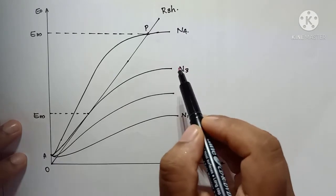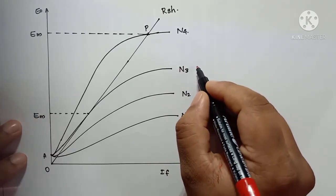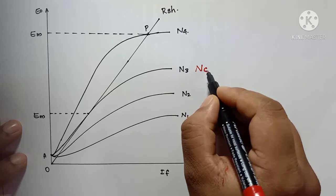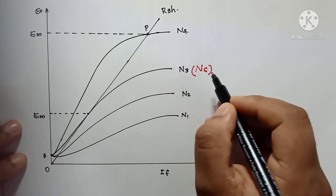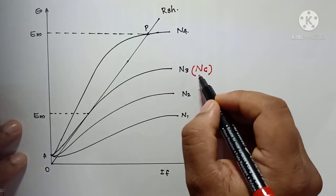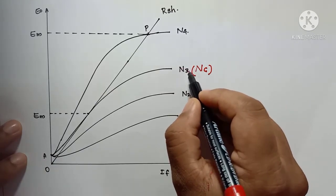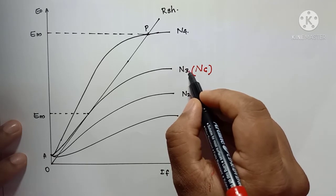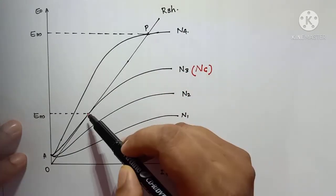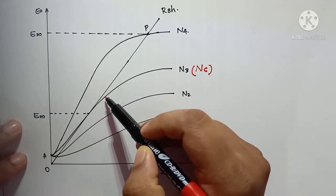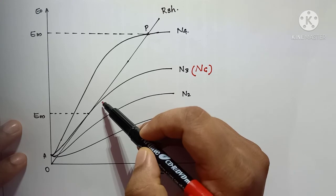That speed is known as the critical speed, represented as Nc. The critical speed is the speed at which the shunt field resistance line becomes tangent to the OCC. At this critical speed the generator will generate minimum EMF, that is Emin.